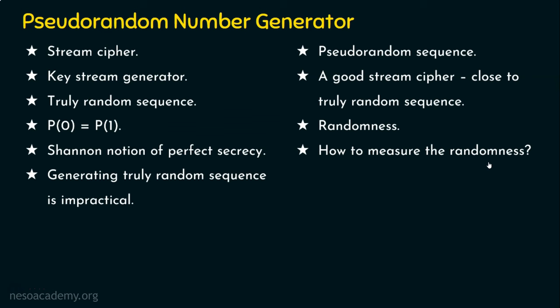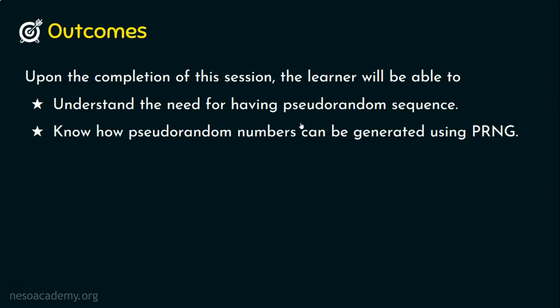That's what we will explore in the next lecture. From this lecture, we understood that a pseudo-random number generator generates a random sequence used for achieving security. Both sender and receiver use the same pseudo-random number generator and must mutually agree on a common key or seed. Only when they use the same seed will they get the same random sequence. We confirmed that randomness is inevitable for security, and to achieve Shannon's notion of perfect secrecy, we need randomness — whether truly random or pseudo-random. Thank you for watching.